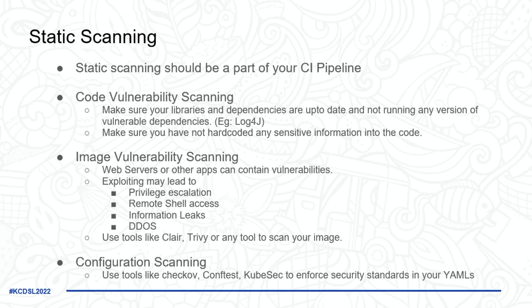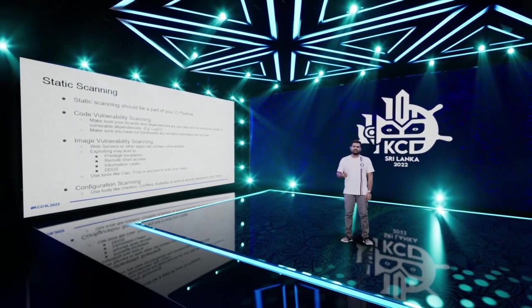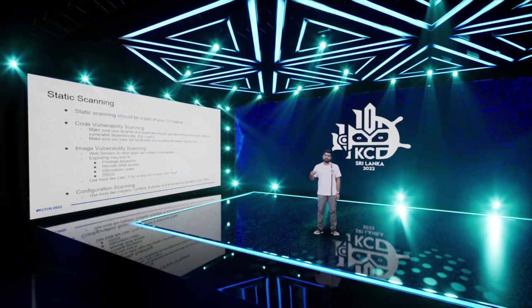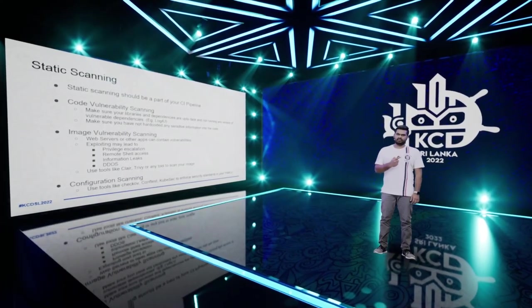Image vulnerability scanning is also essential — your images may contain vulnerabilities that need continuous scanning. Exploiting a vulnerable image can lead to privilege escalation, remote shell access, or data leakage. Tools like Clair and Trivy are commonly used. Configuration scanning — checking your YAML files committed to your GitHub repository using tools like Checkov — helps identify missing security configurations and policies and gives you feedback to fix them.